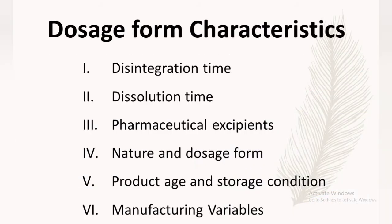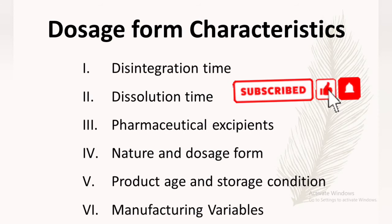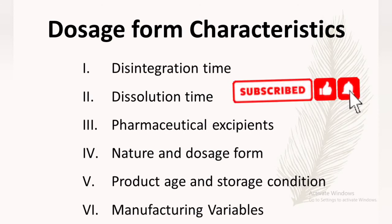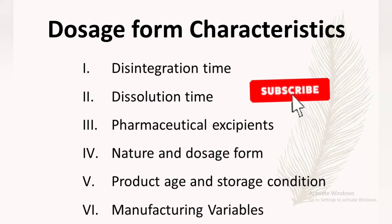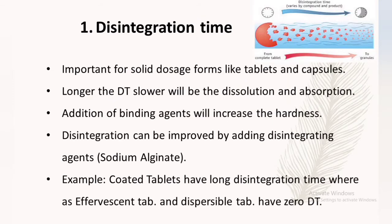Now, the dosage form characteristics which affect absorption include: disintegration time, dissolution time, pharmaceutical excipients, nature and dosage form, product age and storage conditions, and manufacturing variables. Regarding disintegration time — it is important for solid dosage forms like tablets and capsules. Longer the disintegration time, slower will be the dissolution and absorption.